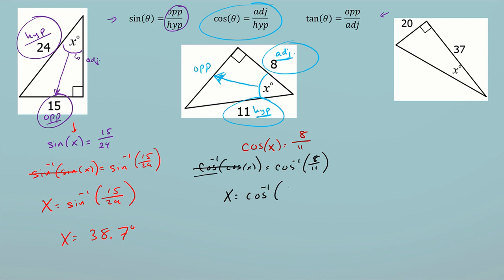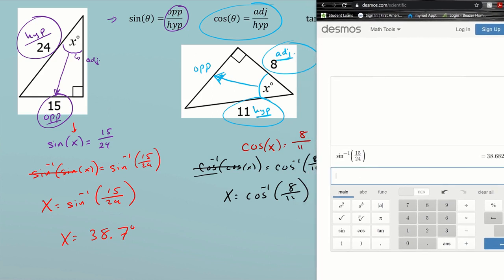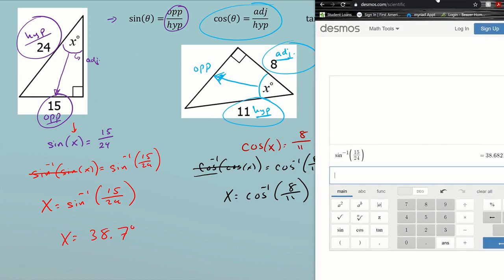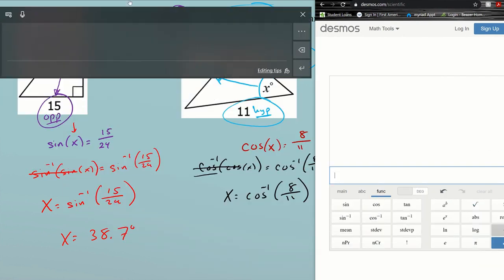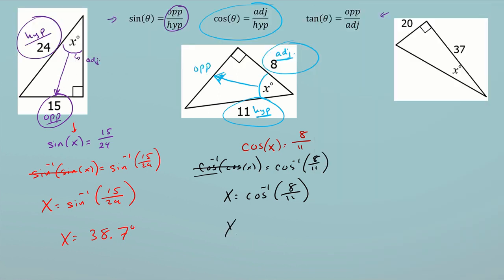On my calculator I clear everything, go to functions, select cosine inverse, and type in 8 divided by 11. That gives me 43.3 degrees. So my angle of reference is 43.3 degrees.